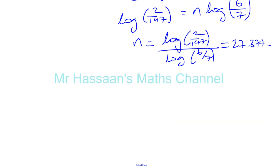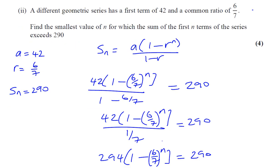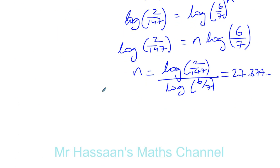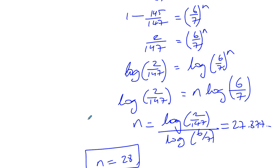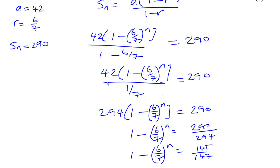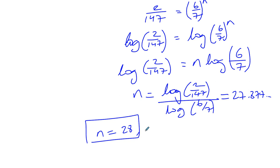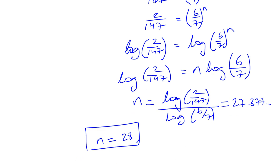Now of course N can only be a whole number. So when N is 27, the sum will not quite have reached 290 — it will be less than that. But when N equals 28, it will have reached 290. The calculation gives 27.877, meaning at N=27 the sum is less than 290, and at N=28 it's more than 290. So the smallest value of N for which the sum exceeds 290 is N equals 28. You don't write 27.8 or 27.9 — N has to be a whole number only. So that's the answer to that question, thank you for watching.